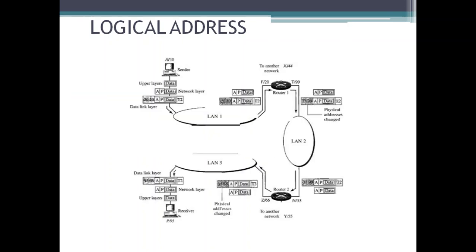This figure shows a part of an internet with two routers connected to three LANs. Each device has a pair of addresses for each connection. Each computer is connected to only one link and has one pair of addresses; however, each router is connected to three networks, so each router has three pairs of addresses. The sender encapsulates its data in a packet at the network layer and adds two logical addresses — source A and destination P. In most protocols, the logical source address comes before the logical destination address.